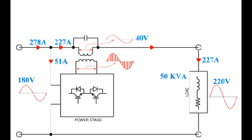Now you can see the operation of the stabilizer in boost mode. This is a 50 kVA stabilizer in boost mode — the input voltage is 180 V and the output is 220 V, so 40 V is added. That 40 V is generated by PWM and added to the mains. At 50 kVA the output current is 227 A, but at 180 V input it is 278 A, so the difference of 51 A flows through the IGBT.